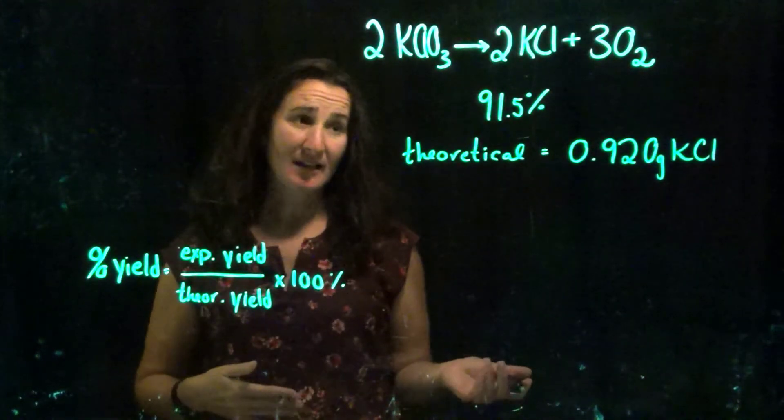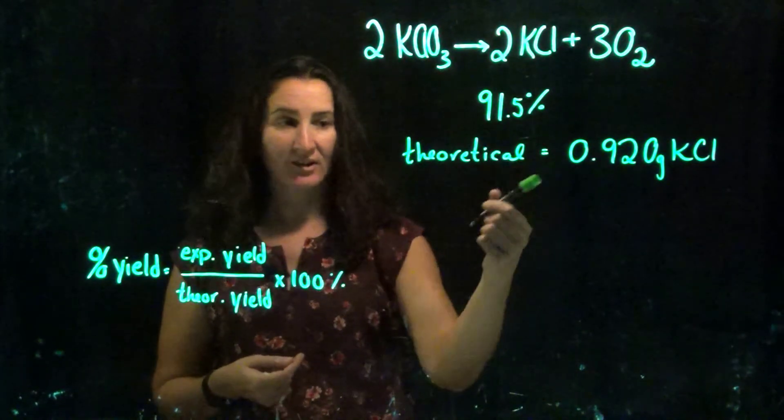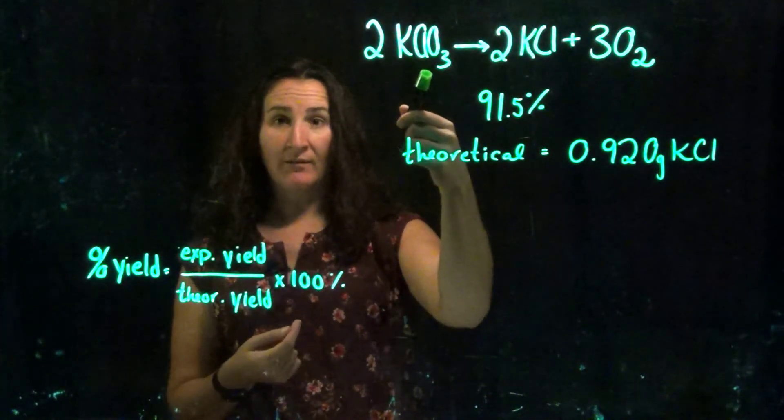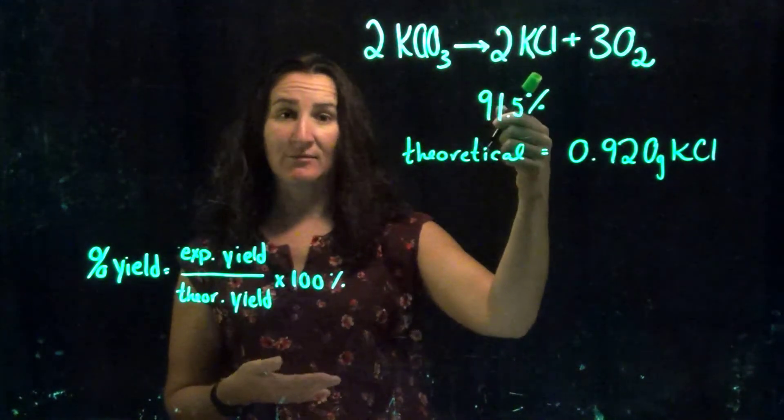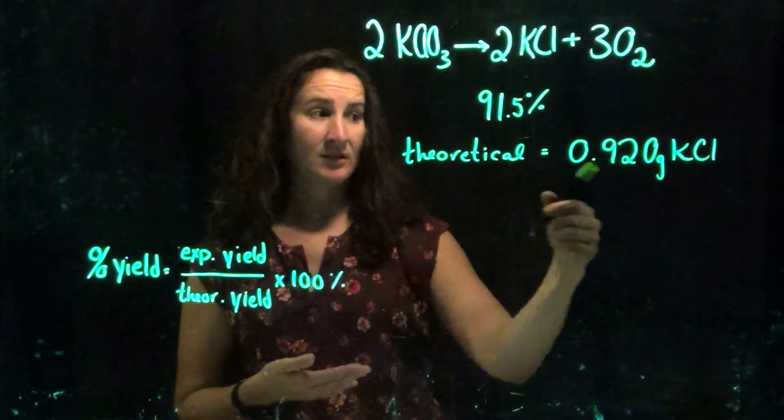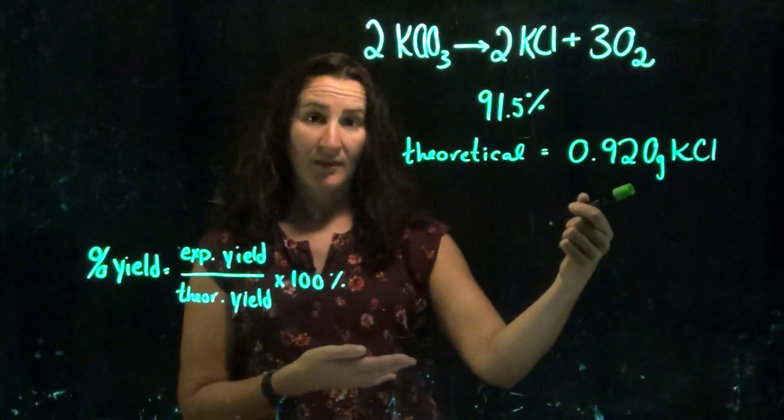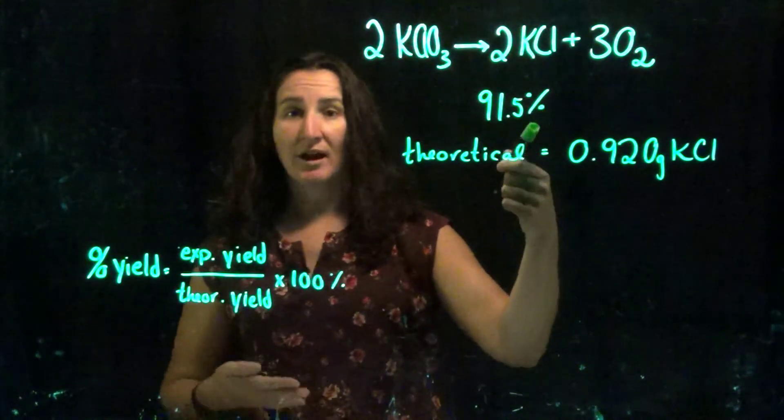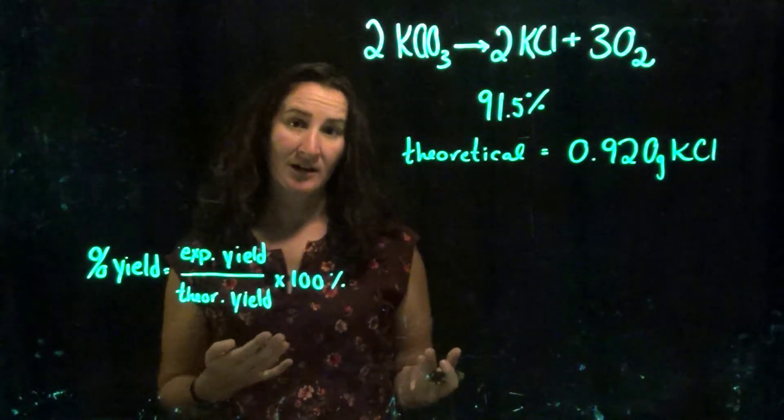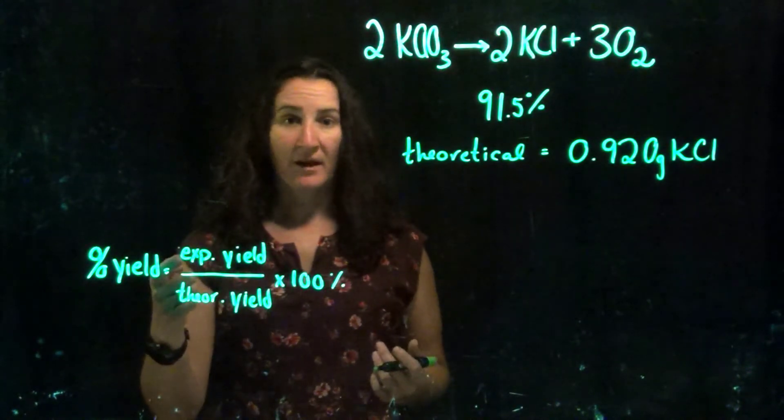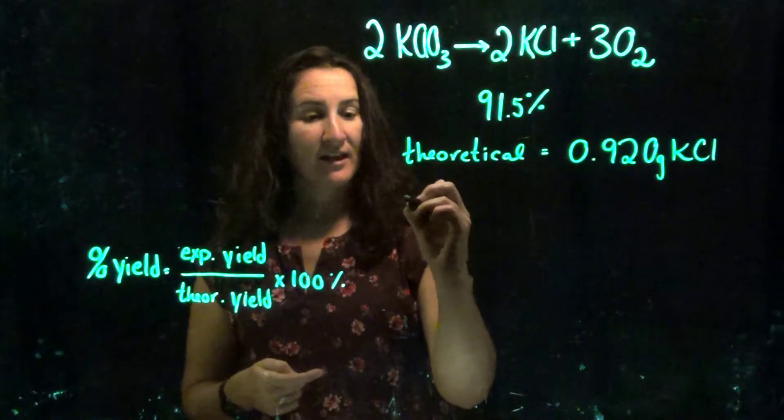Alright, this is our last and final example, where I'm giving you a percent yield. So once again, maybe this is the industry standard, and then I took my number of grams of potassium chloride, and I converted it to potassium chloride, to create a theoretical yield of 0.920 grams. So maybe I know that's my theoretical yield. This is what I'm hoping I can get in the lab, is a 91.5% yield. So what then is my desired experimental yield? Let's do that math and find out.